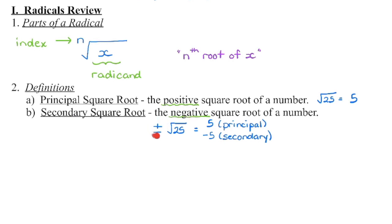So if we see this plus-minus, we have 5 as the principal root. 5 times 5 gives us back 25, the radicand. Negative 5 is the secondary root. Negative 5 times negative 5 also gives us back that radicand of positive 25. So if we see something like this, give the principal root; if we see this plus-minus, then we would give both.